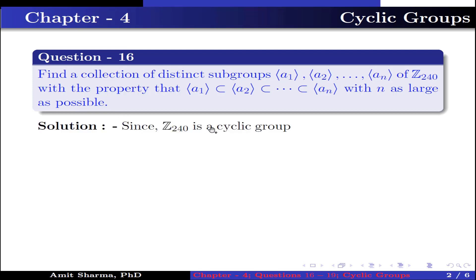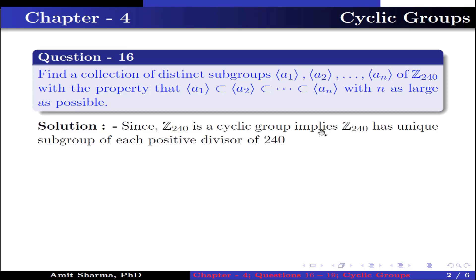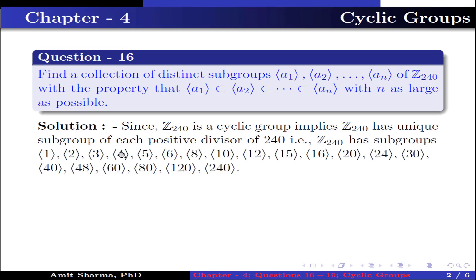Since Z240 is a cyclic group, this implies Z240 has a unique subgroup for each positive divisor of 240. That is, Z240 has subgroups generated by 1, 2, 3, 4, 5, 6, 8, 10, 12, 15, 16, 20, 24, 30, 40, 48, 60, 80, 120, and 240. These are a total of 20 subgroups.